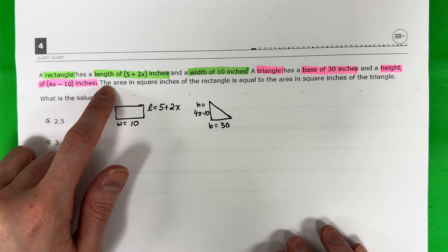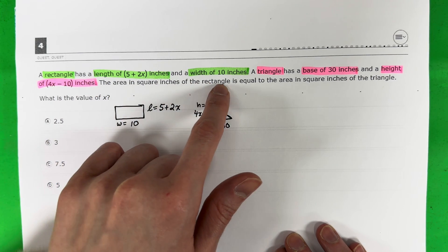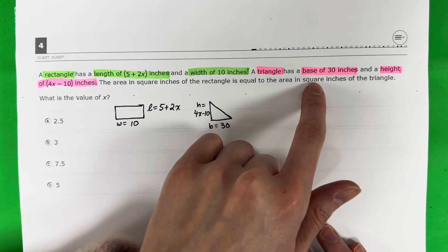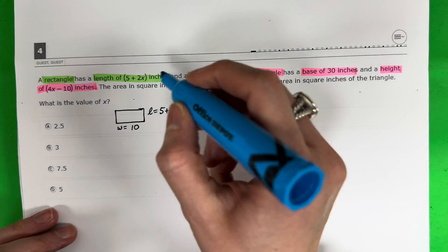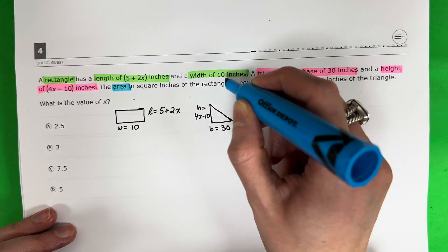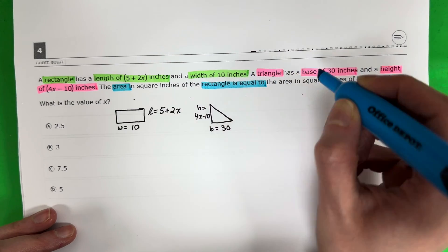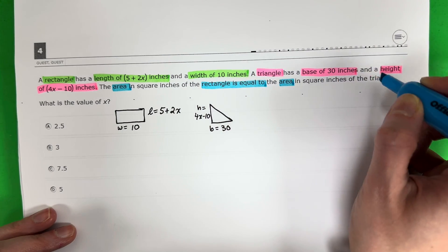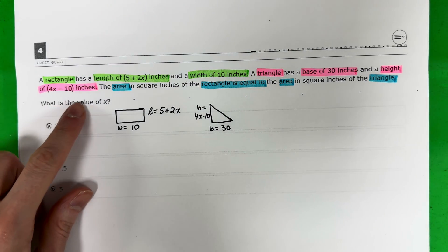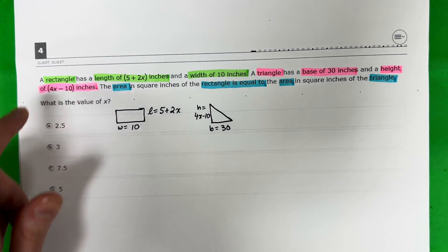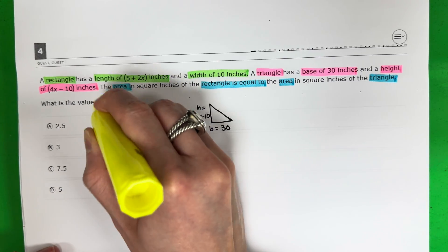Let's continue. The area in square inches of the rectangle is equal to the area in square inches of the triangle. So the area of the rectangle is equal to the area of the triangle. What is the value of x? And I need to find x.